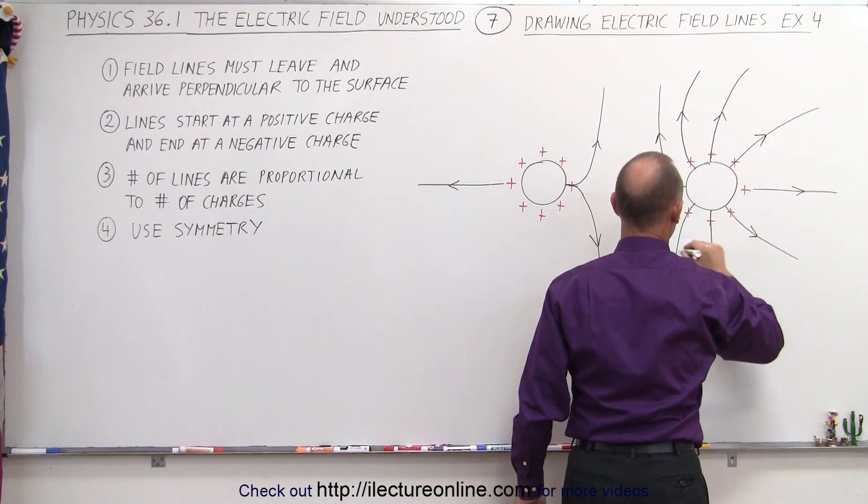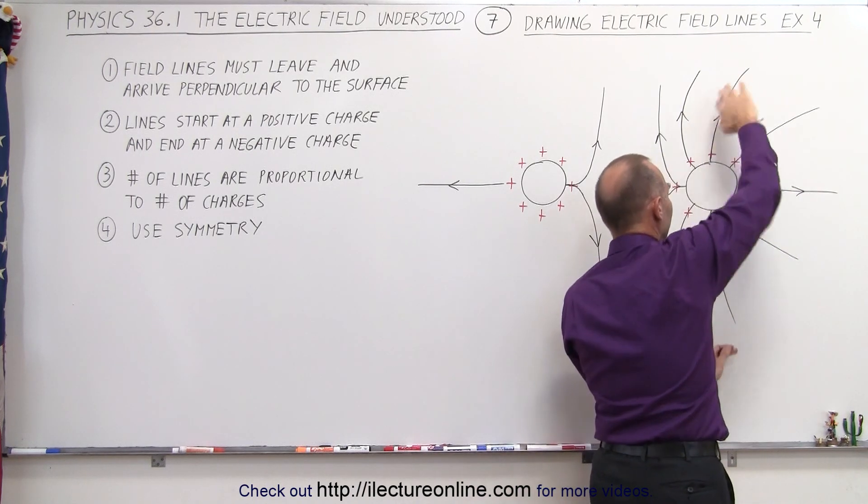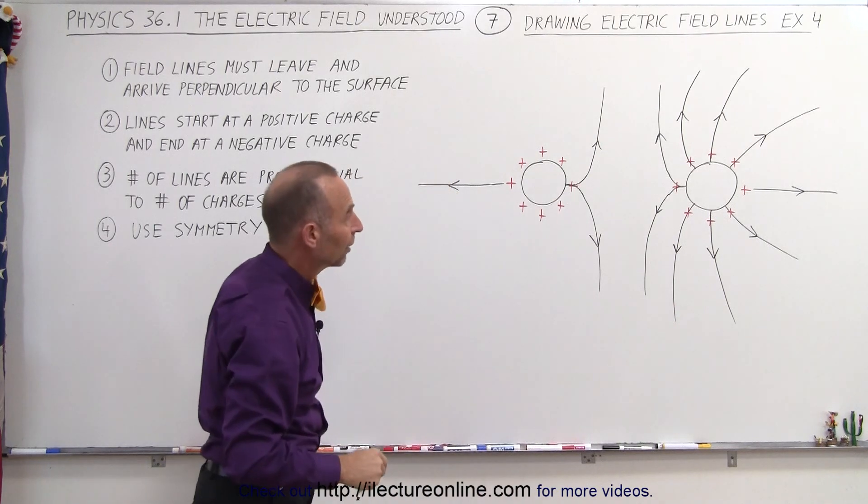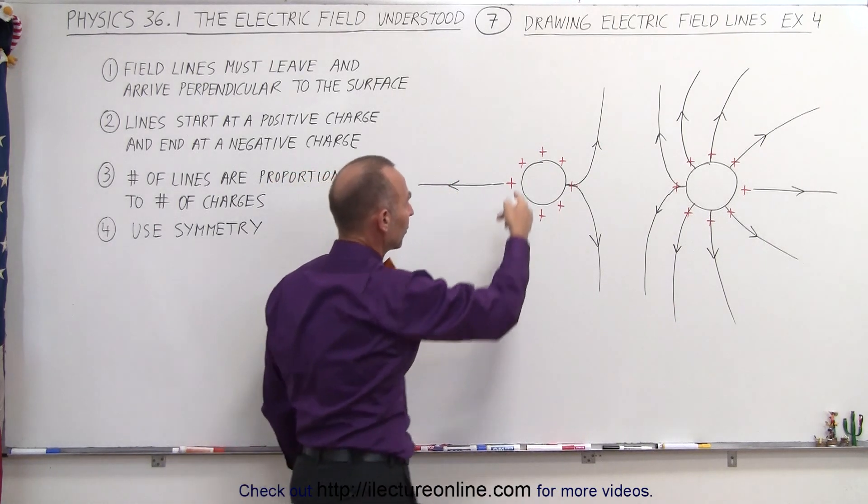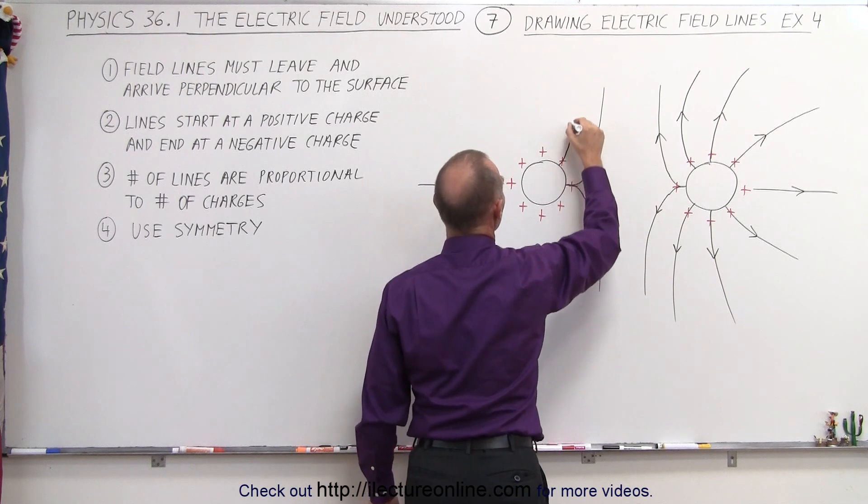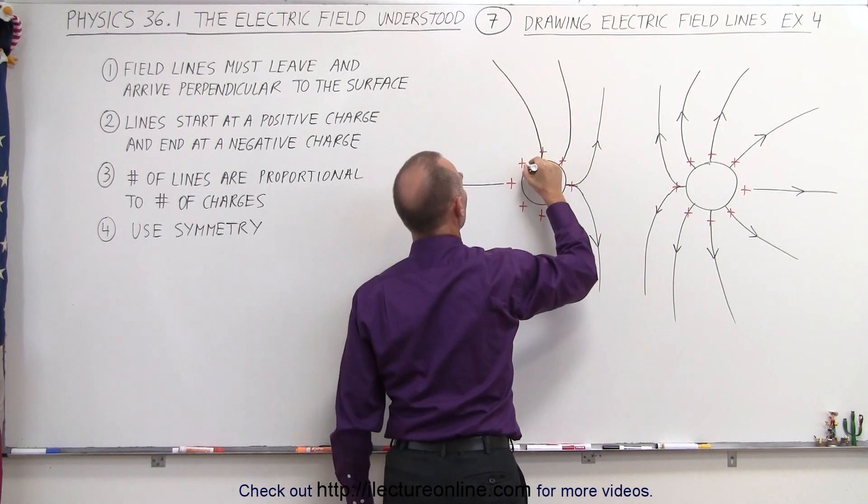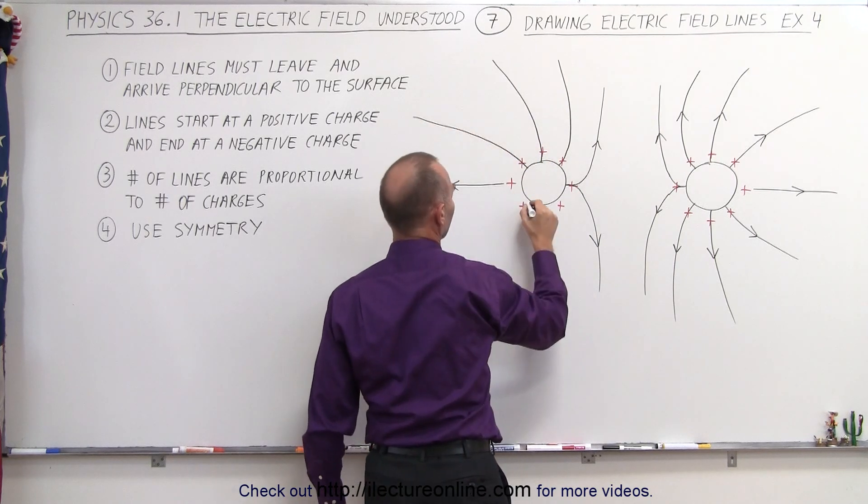So now you can see that the field lines will all emanate away, but tend to curve away from the other side here because there's, of course, a repulsive force there. And then the same will happen over here. So just emanate like that. Come straight up and then curve this way, straight up and curve this way. Same over here.